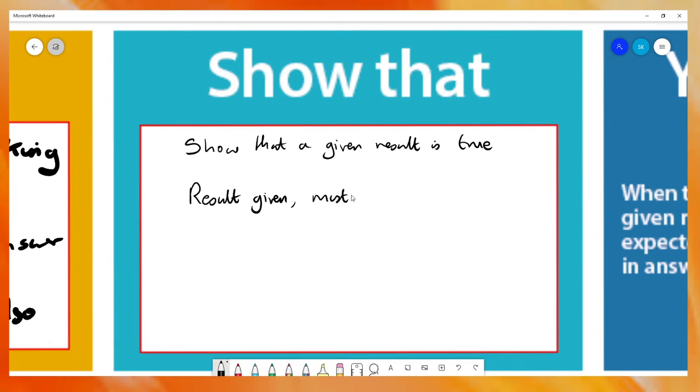You must ensure that you show detailed working. Really try not to skip steps. Complete precisely how one thing gets to another. Skipping steps leads to ambiguity in your answer.